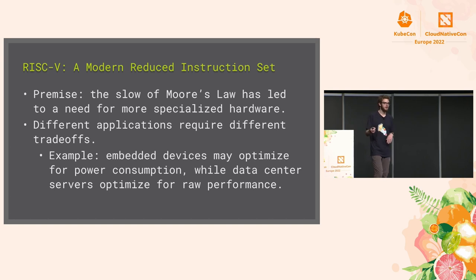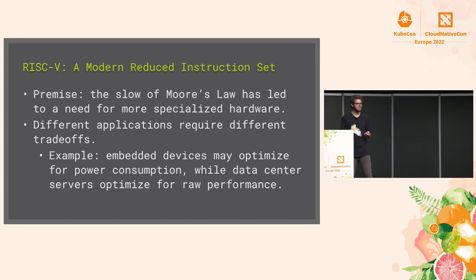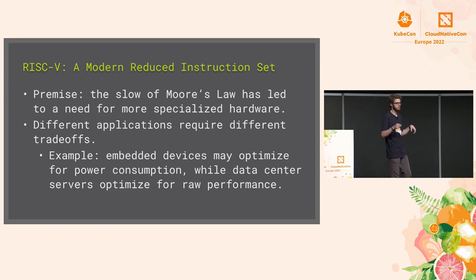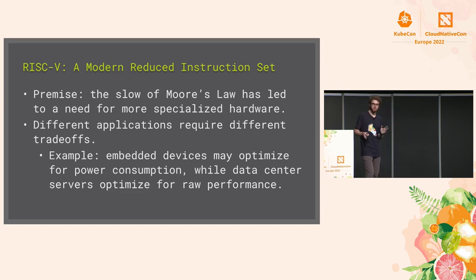The performance equation is straightforward: if you hold clock rate constant, the number of instructions in a program and the average cycles per instruction dictate execution time. CISC reduces instruction count; RISC reduces cycles per instruction. Over time we've leaned more toward RISC architectures for reasons including power consumption and hardware complexity. RISC-V is a modern instruction set that takes into account the current status quo of computing.